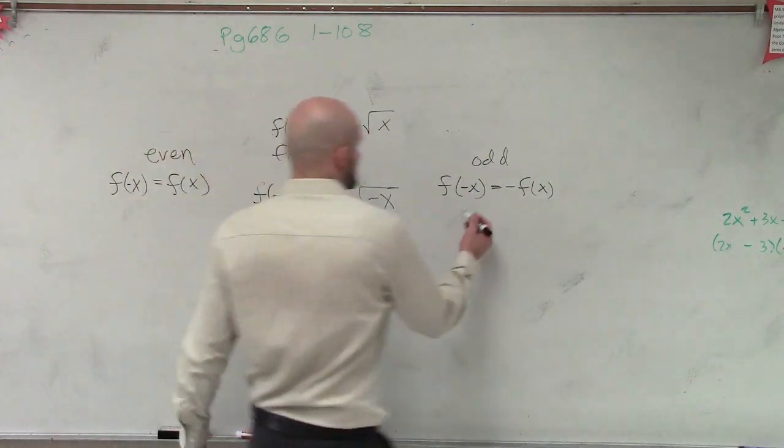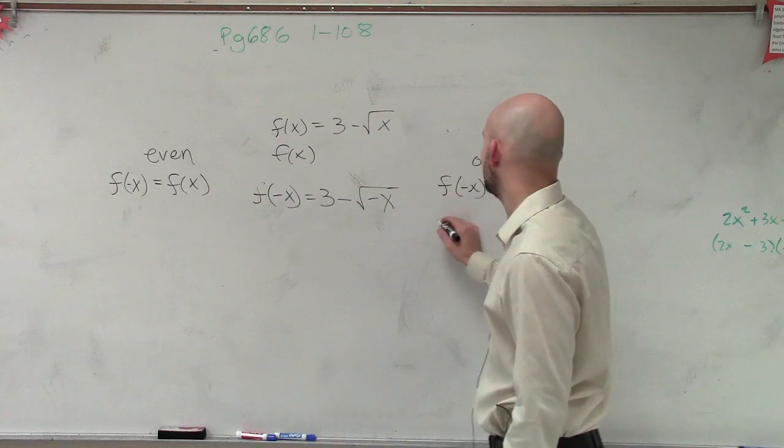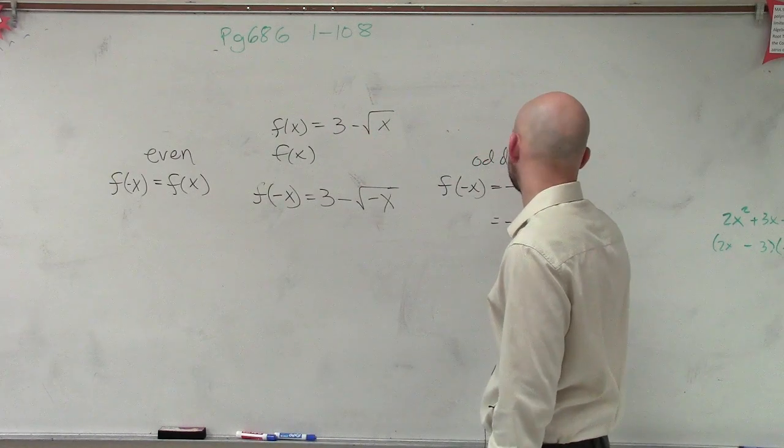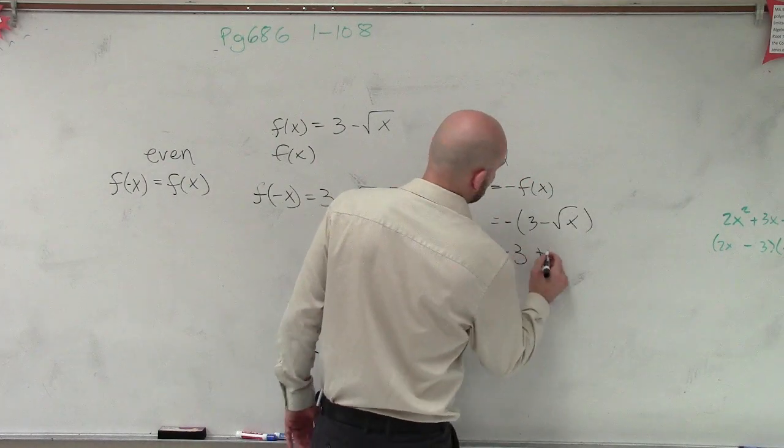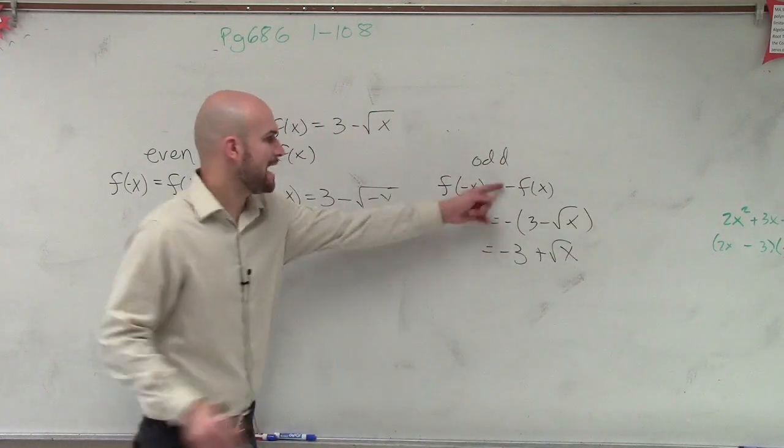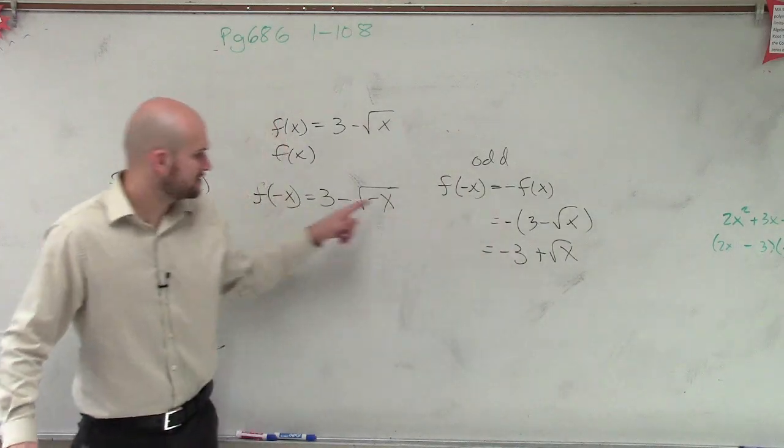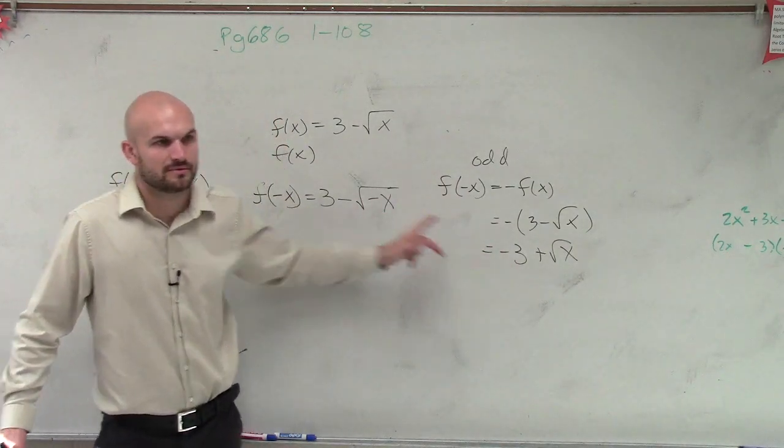Let's see what the opposite of f(x) would look like. The opposite of f(x) would be -(3 - √x), which equals -3 + √x. So opposite f(x) looks like this. Do those look the same? No.